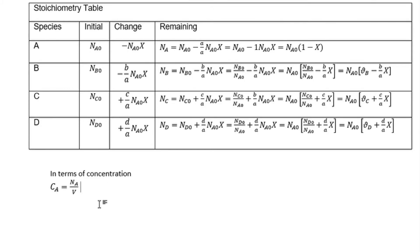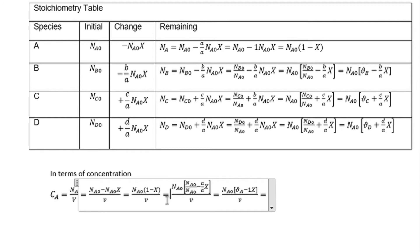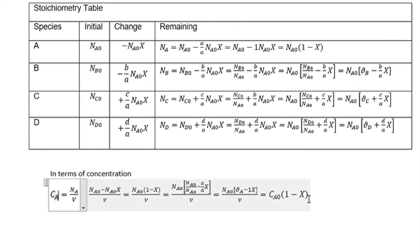The next step is deriving everything into its concentration. We know that concentration is basically moles over volume. C_A, the final concentration, can be represented as the final moles of A over its volume. Since we are not dealing with volumetric flow rate, we just use volume. Substituting the expression for moles of A, we can elongate and further simplify to get our final concentration of A expressed as a function of conversion.